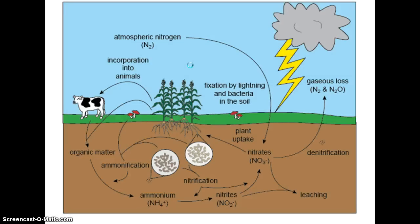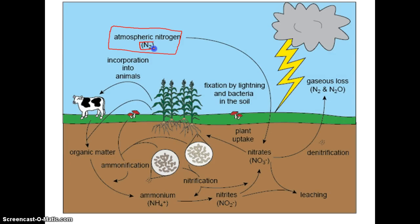The final cycle we'll spend real time on in this lecture is the nitrogen cycle. Nitrogen, like carbon, is an important nutrient that living organisms need to survive, constantly recycling through any given ecosystem. Atmospheric nitrogen is always present in the air around us — in fact, over 70% of our air is composed of nitrogen — in the form of N₂ molecules, two nitrogen atoms bonded together.